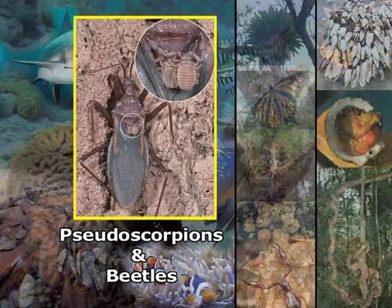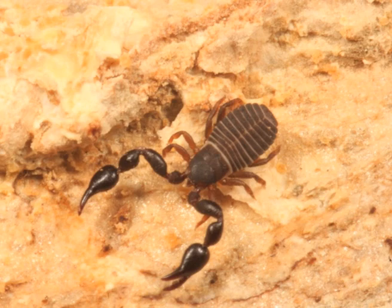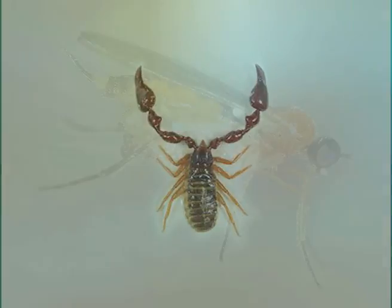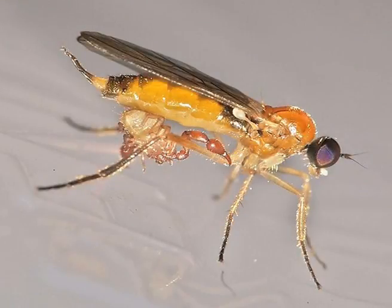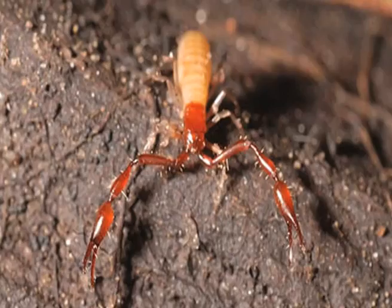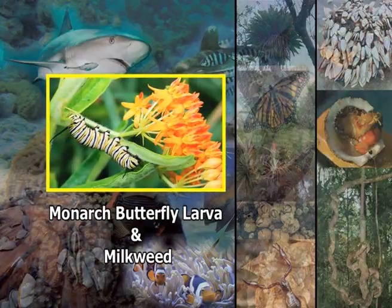Pseudo-scorpions and beetles also show a commensal relationship. Pseudo-scorpions are scorpion-like insects that do not have stingers. They hide themselves under the wing covers of large insects like beetles, which gives them protection from their predators and provides a means of transportation over a larger area. Because of their small size and lack of sting, they do not harm the beetle in any way.